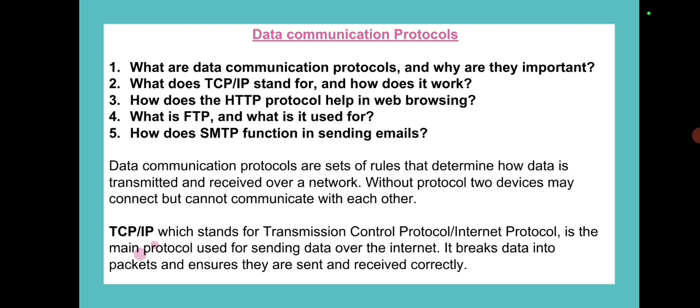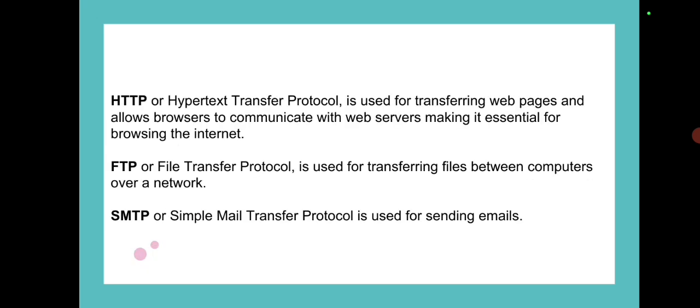Data communication protocols are a set of rules that determine how data is transmitted and received over a network. TCP/IP stands for Transmission Control Protocol / Internet Protocol — it is the main protocol used for sending data over the internet. HTTP is used for transferring web pages, allowing browsers to communicate with web servers, making it essential for browsing. FTP, or File Transfer Protocol, is used for transferring files between computers over a network. SMTP, or Simple Mail Transfer Protocol, is used for sending emails.